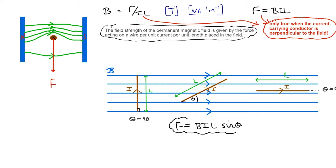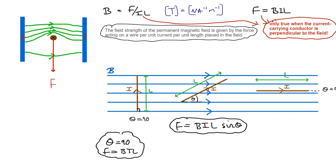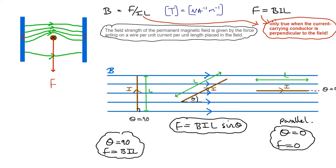The new equation is F equals BIL sine theta. This works because when theta equals 90, sine theta is 1, so F equals BIL — which we already knew. When theta equals 0, F equals 0, meaning if the wire is parallel to the field there's no force and no interaction between the two magnetic fields. In the general case, F equals BIL sine theta gives the magnitude of the force.